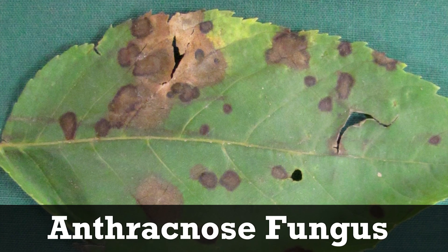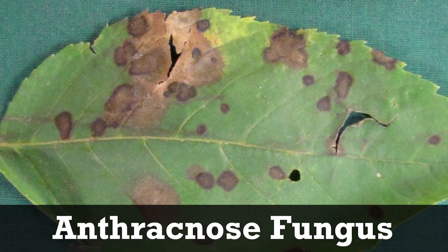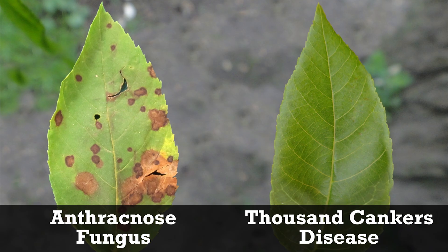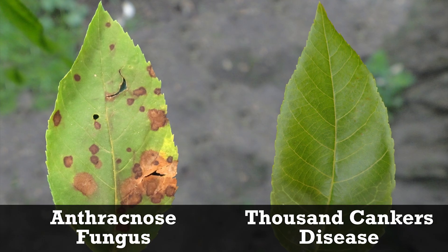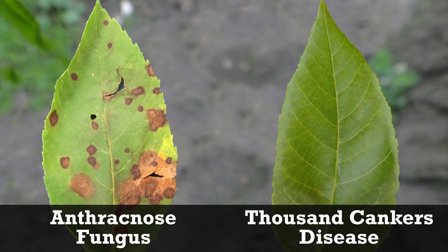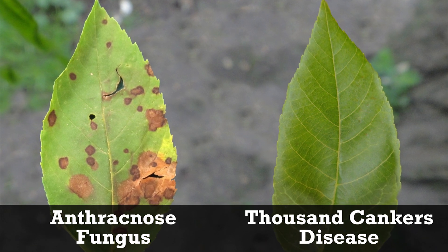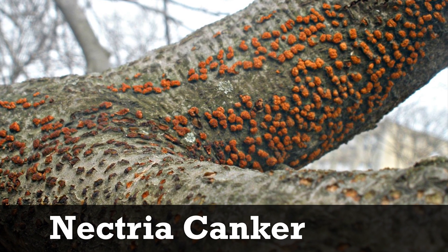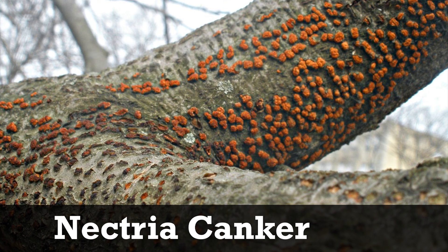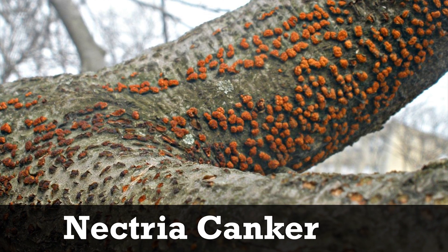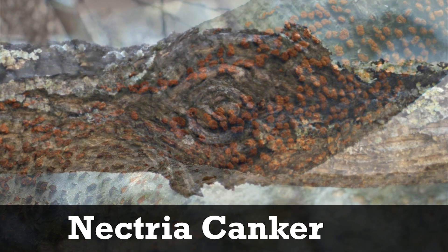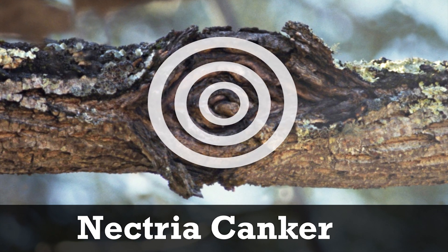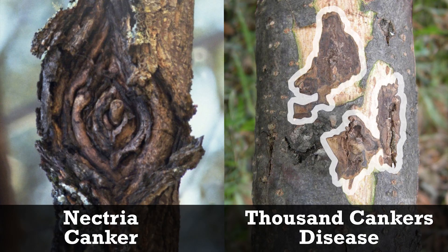There are a couple of things that may be confused with Thousand Cankers Disease. Anthracnose fungus is distinguishable by the dark colored blotches that appear on leaves, while TCD infested leaves do not develop spots. Nectria canker is distinguishable by its brightly colored fruiting bodies and grooved, target-shaped cankers, while TCD cankers are smooth and dark brown.